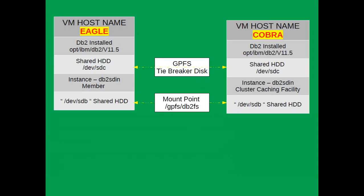The next slide talks about the machines. There is one virtual host called Eagle and another called Cobra. Both have DB2 installed at /opt/ibm/db2/11.5. The shared directory used as the GPFS tiebreaker disk is /dev/sdc (2 GB), and the GPFS shared storage is /dev/sdb (20 GB), mounted at the /gpfs/db2fs location. The instance owner is db2sdn — Eagle will be the member and Cobra the cluster caching facility.